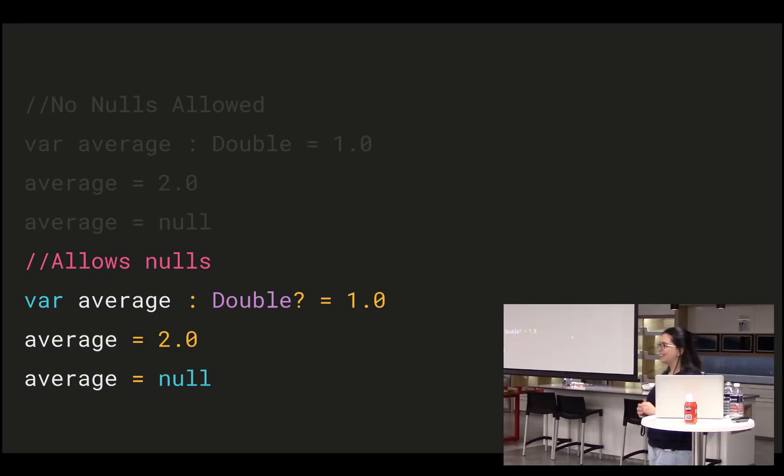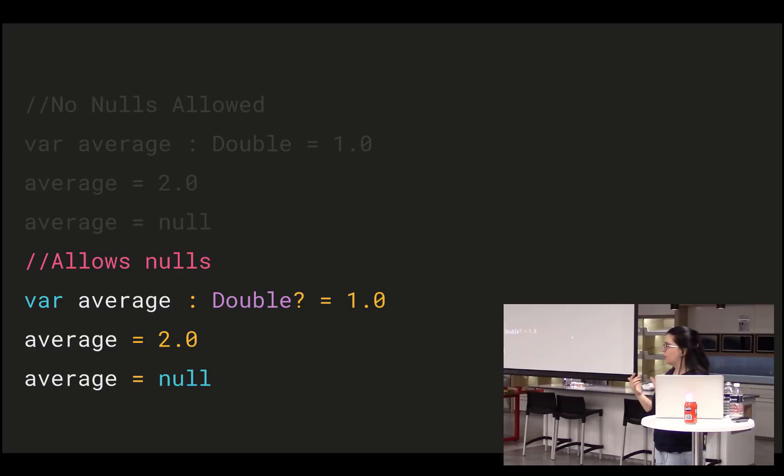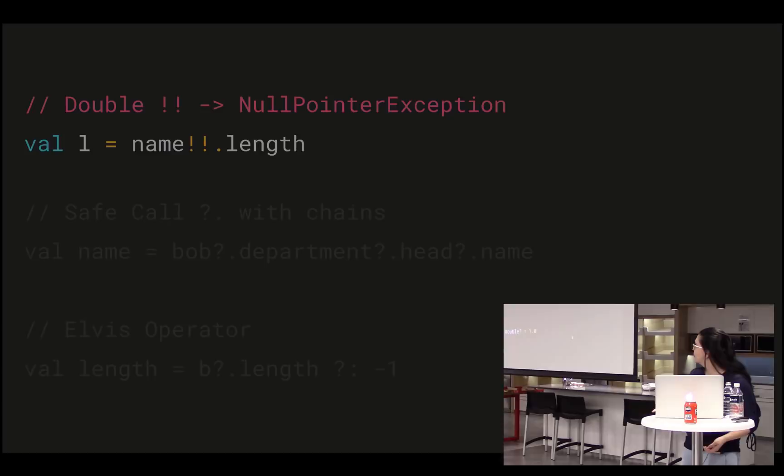If you look at Kotlin and Swift together, they read very similarly. If you can read Kotlin, you can probably read Swift quite well too. It's actually really nice because it means you can work on iOS and Android without too much problem.